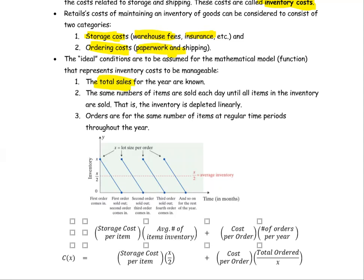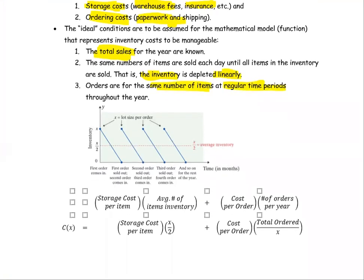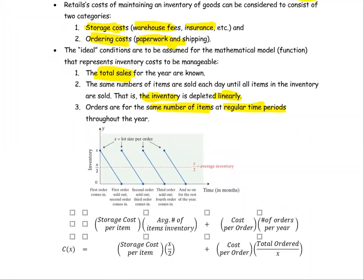The inventory is depleted linearly - that means it decreases in a linear way. If you plot it, the relationship is a straight line. Orders are for the same number of items at regular time periods. So throughout the year, if you order every three months, then exactly every three months you order once, and so forth. Those are the kinds of numbers we're going to use to put together as an equation.